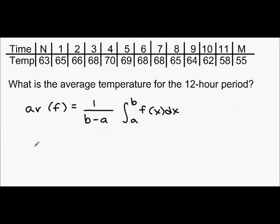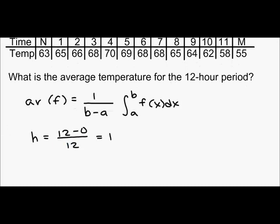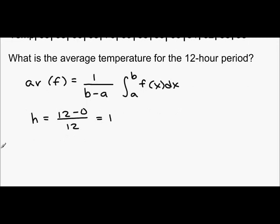So, I'm going to say h equals, if I end at 12, start at time 0, over 12, equals 1. Which you could have just seen basically by counting. And now I'm going to plug in to the trapezoidal rule.